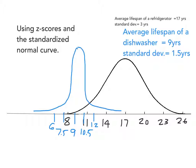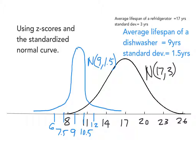One last topic in the video covers z-scores and the standardized normal curve. I have our original graph for refrigerator lifespan — a normal curve with 17 as the average and 3 as the standard deviation. I've also included another graph for a different product, dishwashers, where the average lifespan is about 9 years. With a smaller standard deviation, you can see the distribution is tighter because more dishwashers fall within a shorter lifespan range, so the curve is drawn a little higher and less spread out.